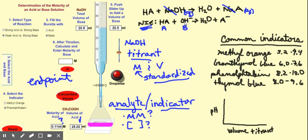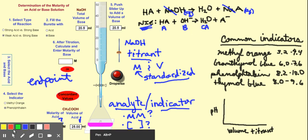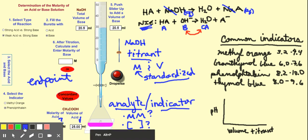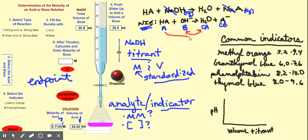When the acid donates the proton to the base, what remains is the conjugate base. Let's review acid-base pairs: HA and A⁻ are an acid-conjugate base pair; OH⁻ and H₂O are a base-conjugate acid pair. Once the acid donates the H⁺, it becomes the conjugate base. This is the reaction happening in the flask, and once it goes to completion at the desired pH we reach what's called an equivalence point.